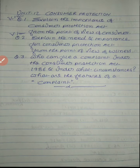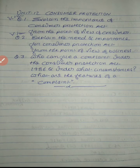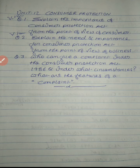The last unit is unit number twelve: Consumer Protection Act 1986. Question number one or question number two — either one will come, so you must read both. Question one asks to explain the importance of the Consumer Protection Act from the point of view of the consumer. Question two asks the same but from the point of view of business. Question three asks: 'Who can file a complaint under the Consumer Protection Act 1986, under what circumstances, and what are the features of a complaint?' These are all very important questions.